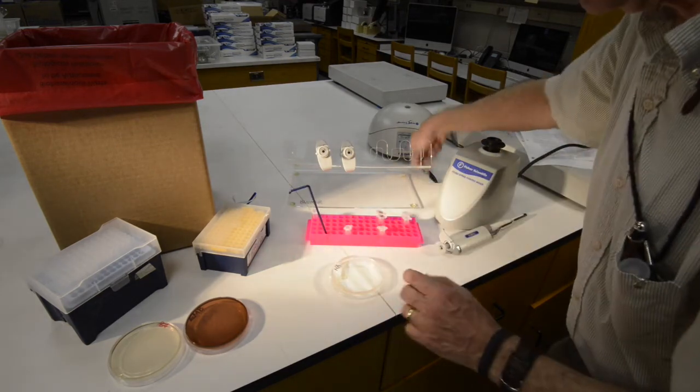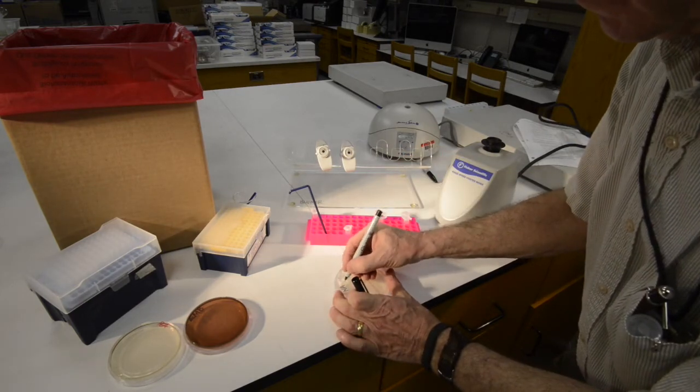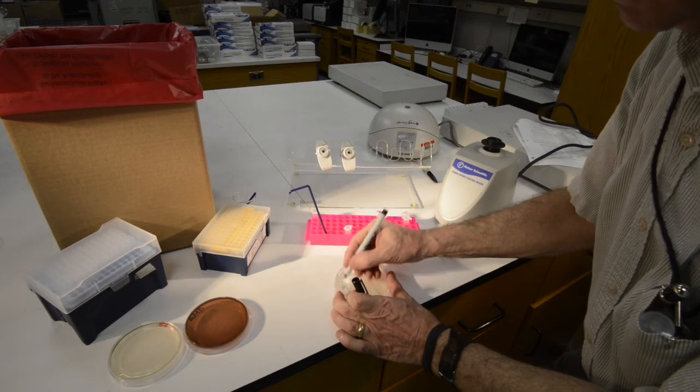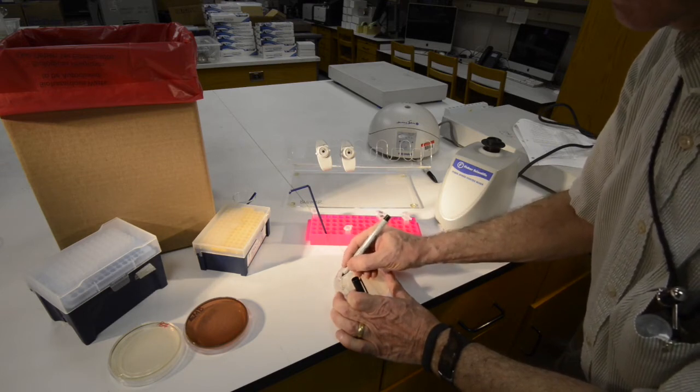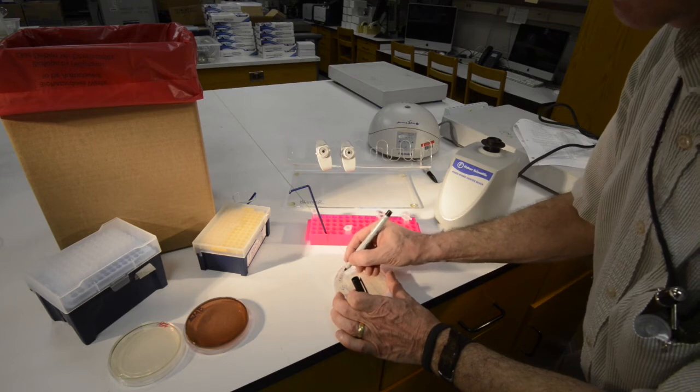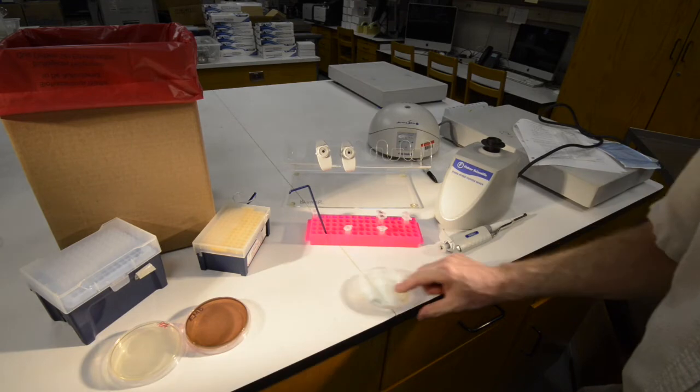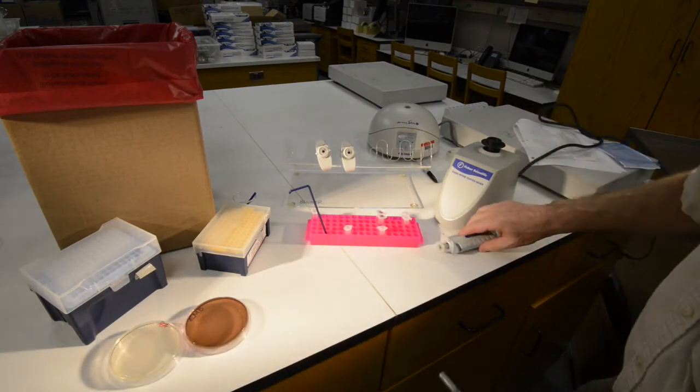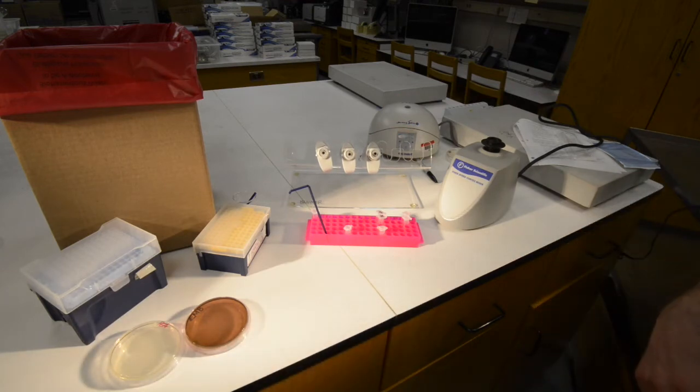It is possible to use the same spreader stick for multiple plates if the source of the microbiome bacteria is the same. If you're going to use the same stick without flaming it, and you can't flame a plastic stick, start with your negative control, then spread your lower dilutions, then spread your full strength dilution.